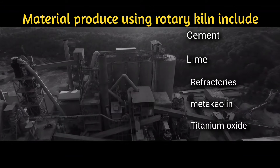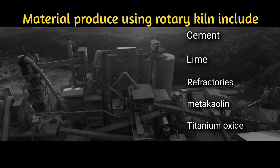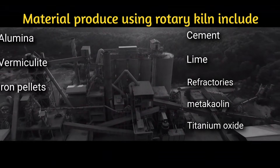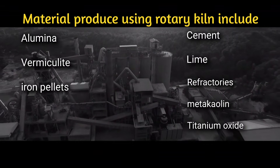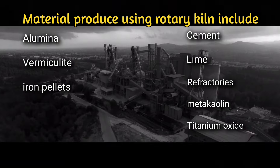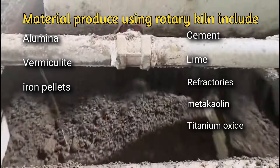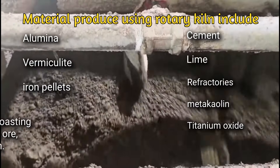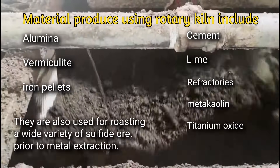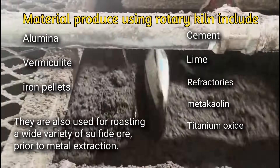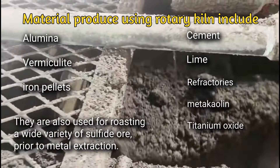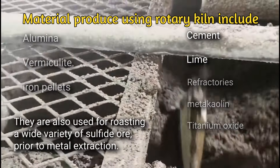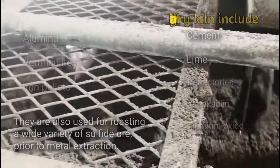Materials produced using rotary kilns include cement, lime, refractories, metakaolin, titanium oxide, alumina, vermiculite, and iron ore pellets. They are also used for roasting a wide variety of sulfide ores prior to metal extraction.